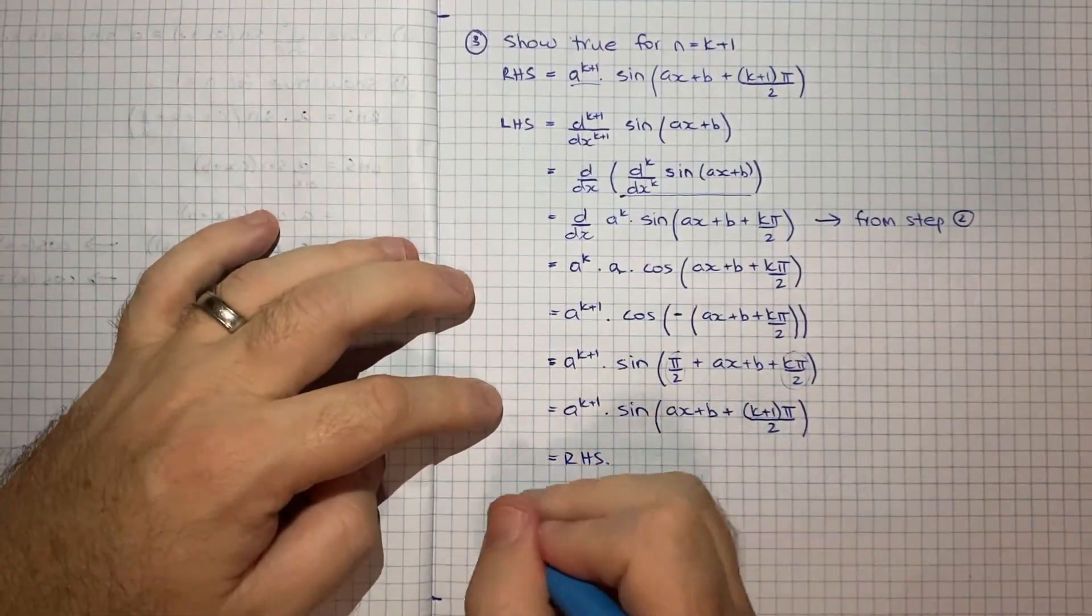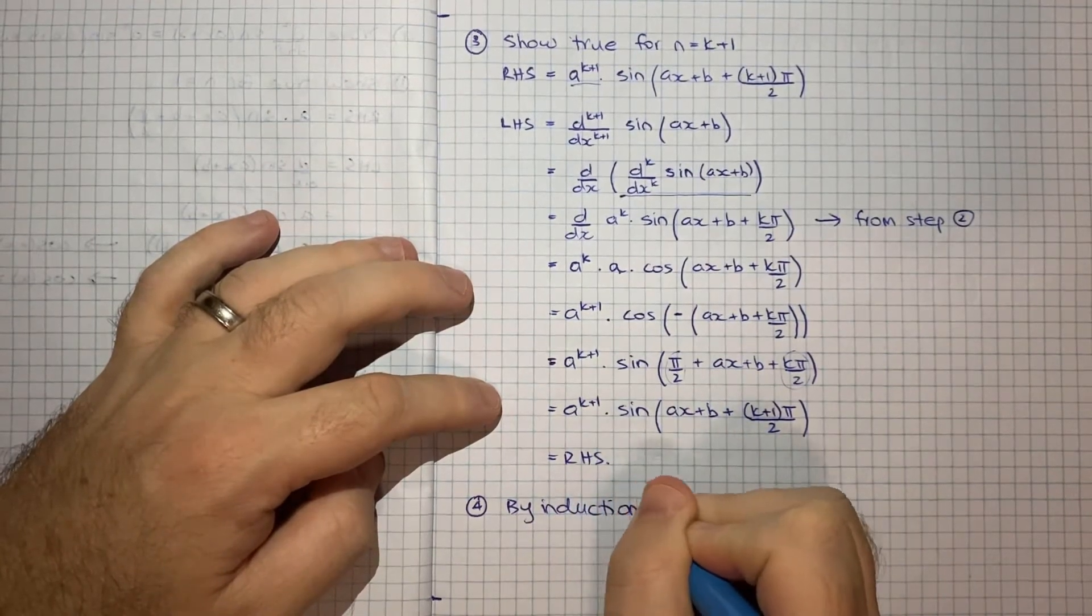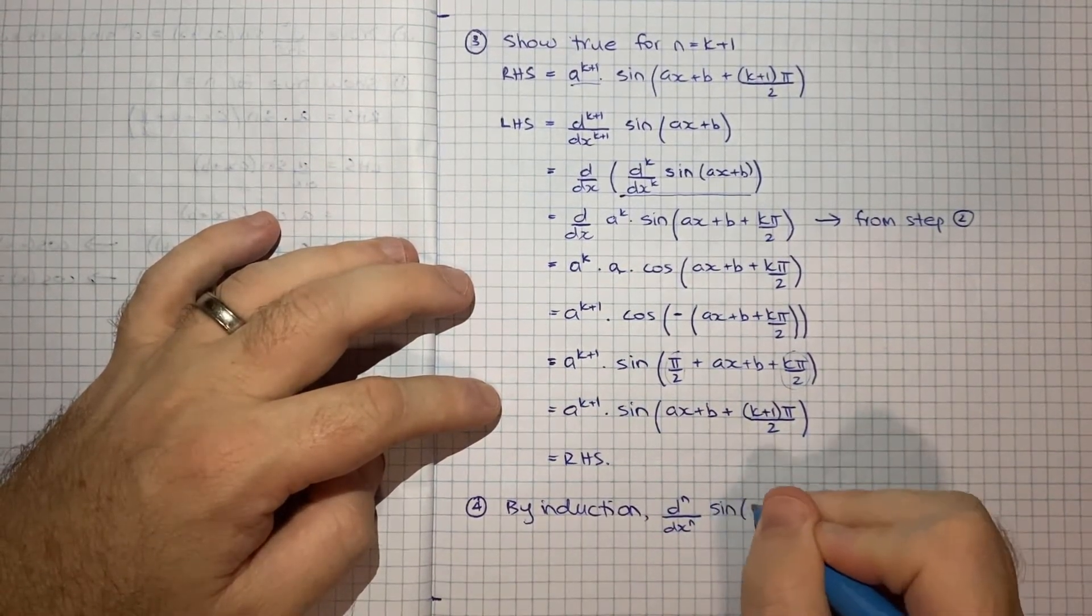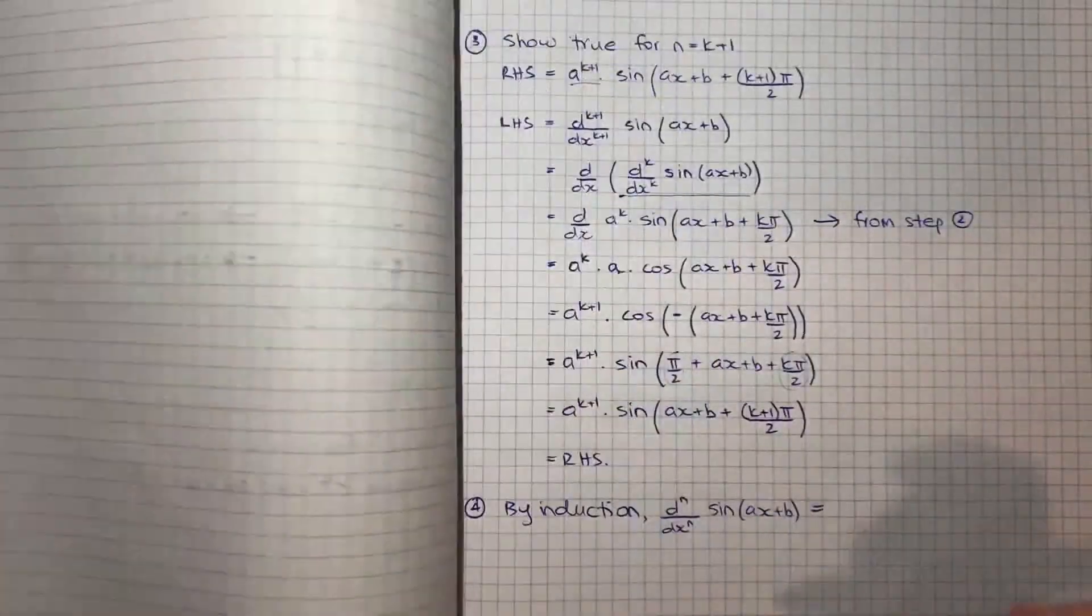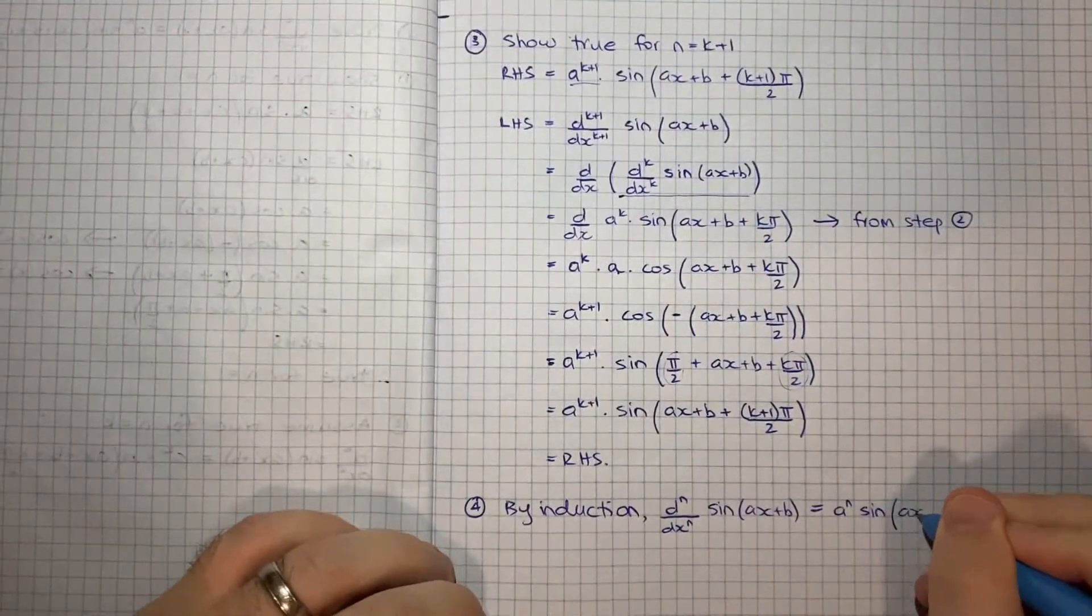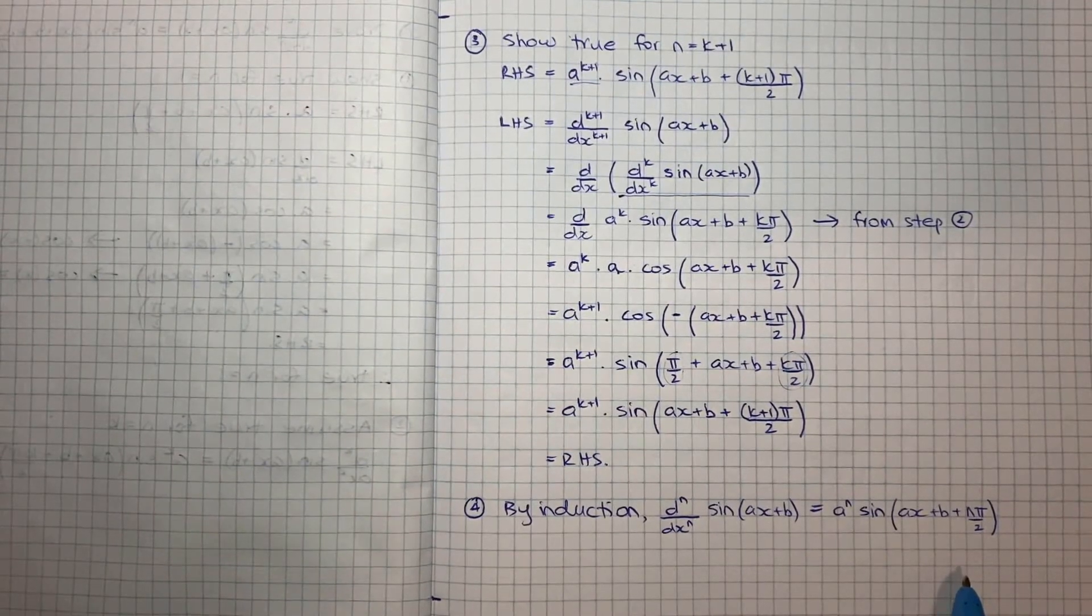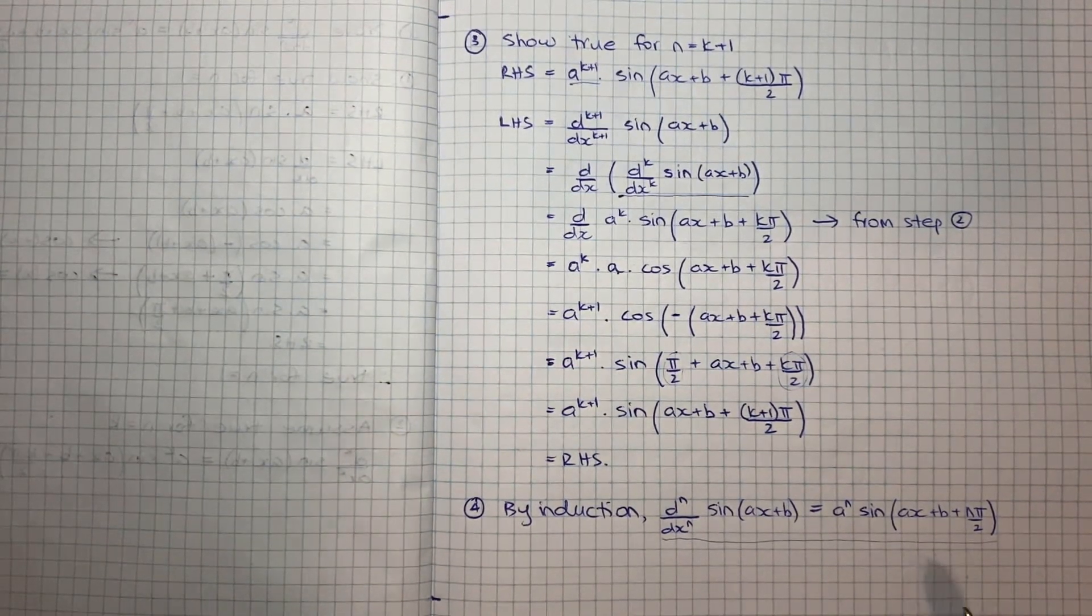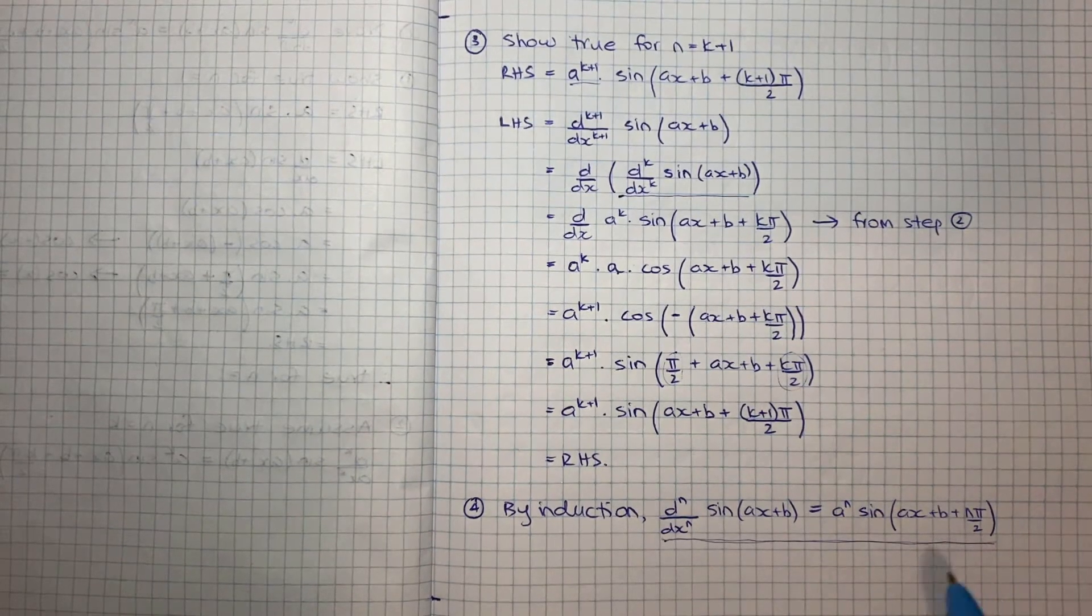Alright, so therefore our final step of the induction process is we can say by induction the nth derivative. So d^n/dx^n of sine of ax+b is equal to, and I'll just make sure I write this properly, a^n of sine ax+b+nπ/2. Alright, so that's part A of the question. So this result naturally is going to help us with part b. And we know that because part b starts with the word hence. So I think this is a handy result to have been able to prove in and of itself.